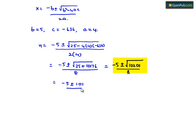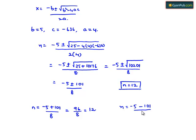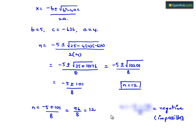Since √10201 = 101, taking the plus sign: n = (−5 + 101) / 8 = 96/8 = 12. Taking the minus sign gives n = (−5 − 101) / 8, which is a negative number. Since the number of terms cannot be negative, that solution is not possible. Therefore n = 12.